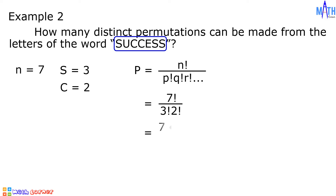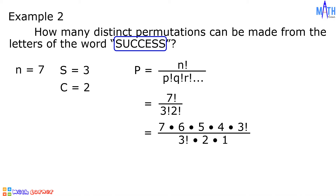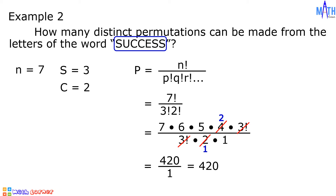7 factorial equals 7 times 6 times 5 times 4 times 3 factorial, all over 3 factorial times 2 factorial, which becomes 2 times 1. Cancel out common factors — cancel out 3 factorial. 4 and 2 share a common factor of 2: 4 divided by 2 is 2, and 2 divided by 2 is 1. 7 times 6 times 5 times 2 equals 420, and 420 divided by 1 is 420. There are 420 different permutations.